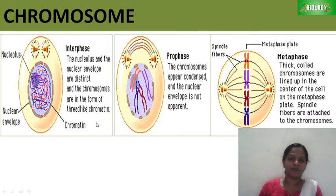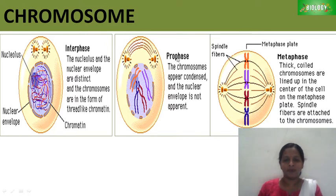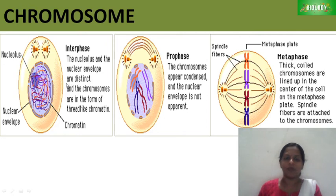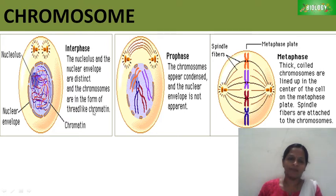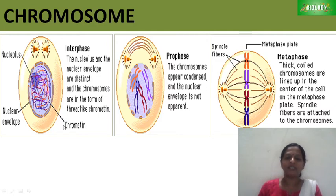Here three diagrams are shown. The first diagram shows the interphase, the second diagram shows the prophase, and the third diagram shows the metaphase of cell division. As we know, interphase is called the preparatory phase in which the chromosomes are in the form of thread-like chromatin. The chromatin is a thread-like structure in which DNA is coiled or wrapped around the histone proteins.